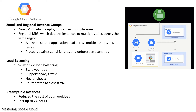Preemptible instances: For workloads where minimal costs are more important, you can save the cost of your workload by adding preemptible VM instances. They last up to 24 hours and are gracefully preempted.